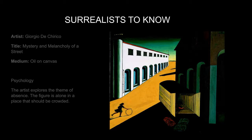Like the title suggests, there seems to be a bit of mystery in this painting. Why is the girl playing alone in a city where everyone has vanished? Is it a portrait of being lonely?